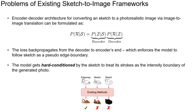Until now, image-to-image translation was the go-to architecture for converting a sparse line drawing into an image. However, adapting it directly for sketches results in deformed outputs. The encoder-decoder architecture can be formulated as the probability of generating a photo given input sketch S, where the encoder embeds the sketch into latent feature Z and the decoder generates output photo R. As the loss back-propagates during training with sketch-photo pairs, the model becomes hard-conditioned by the sketch, treating its strokes as the intensity boundary of the generated photo, thus resulting in deformed outputs.